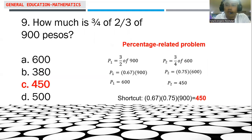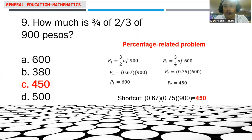Considering item number 9, this is a percentage-related problem. The question is: how much is three-fourths of two-thirds of 900 pesos? Recalling that the word 'of' represents multiplication, we simply multiply the three values: 3/4 multiplied by 2/3 multiplied by 900, and we get 450 as the result. So 450 is three-fourths of two-thirds of 900 pesos.